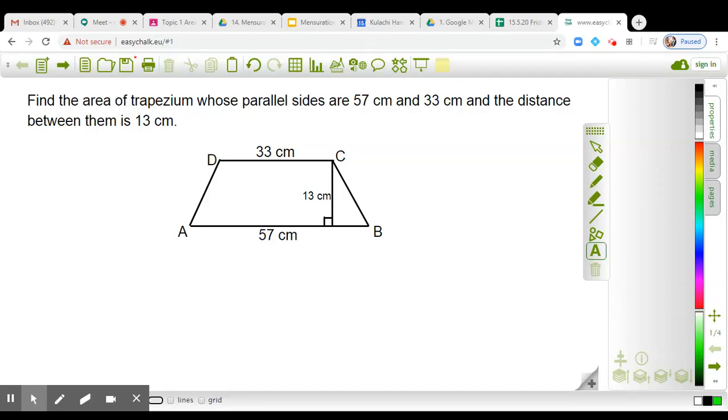So dear students, in today's class I am going to discuss this question number one which says: Find the area of trapezium whose parallel sides are 57 centimeter and 33 centimeter, and the distance between them is 13 centimeter.